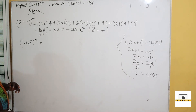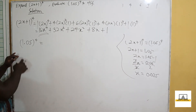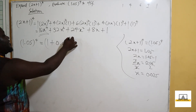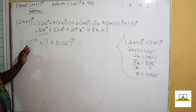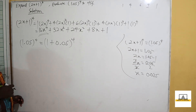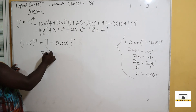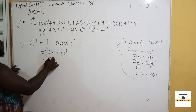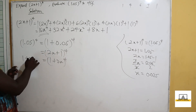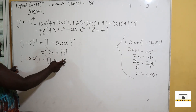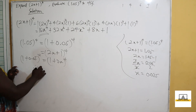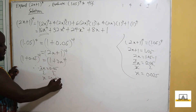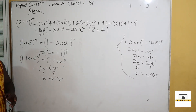Alternatively, we can write 1.05^4 as (1 + 0.05)^4. Comparing this to (1 + 2x)^4, we see 1 = 1 and 2x = 0.05. Dividing by 2 gives x = 0.025, confirming the same result whichever method we use.